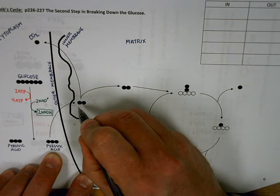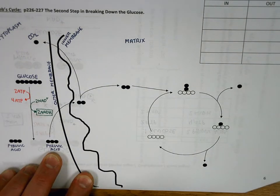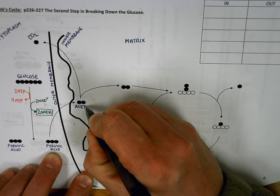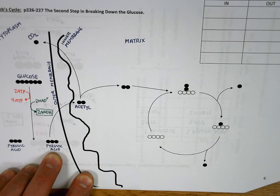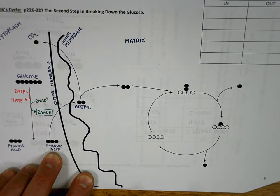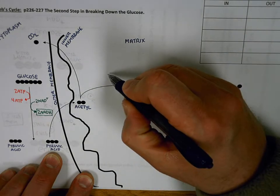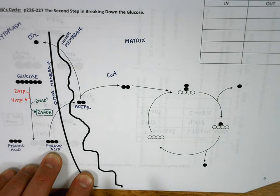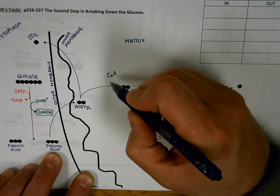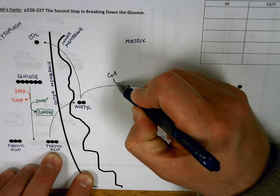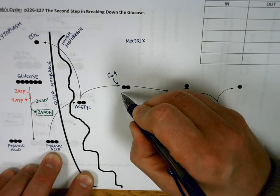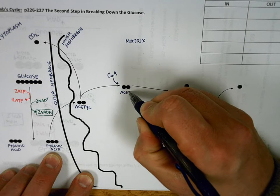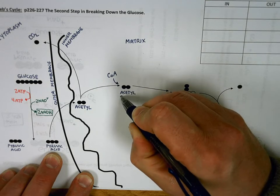What's left is a two-carbon molecule here known as acetyl. The acetyl combines with an enzyme called coenzyme A. The enzyme and the acetyl together, sometimes referred to as an acetyl coenzyme A complex.